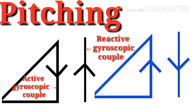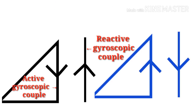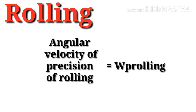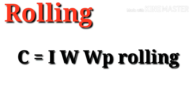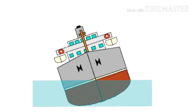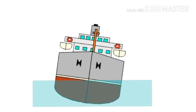Regarding the effect of the gyroscope in pitching: when the nose moves downward, the gyroscopic couple tends to move the nose back upward. For rolling, the formula is similar — C = I·ω·ωp_rolling — but in rolling there is no such gyroscopic effect. I hope this will help you solve the problems and get 8 to 13 marks in your university examination.